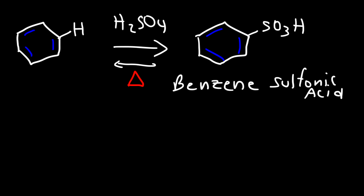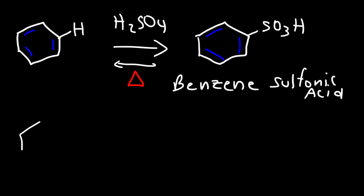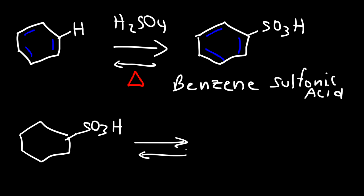This reaction is reversible. So if we want to, we can go from benzene sulfonic acid back to benzene. In order to do this, you need to react benzene sulfonic acid with water under dilute acidic conditions. You also need to heat the solution to make that work, and this will take it back to benzene.